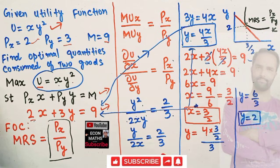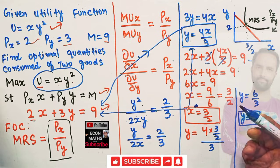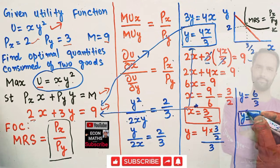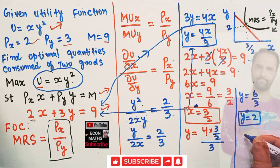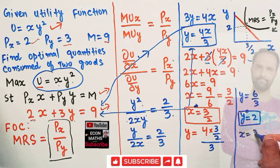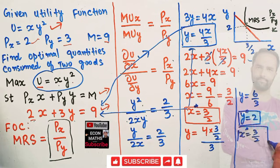So the consumer will optimally consume 2 units of good y and 3/2 units of good x, that is 1.5 units of good x. I hope I made myself clear — thank you.